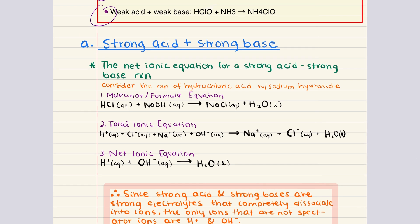In a reaction between a strong acid and a strong base, the strong electrolytes completely dissociate into their ions. So the net ionic equation for a strong acid with a strong base demonstrates the formation of water from hydrogen ions and hydroxide ions. This results in a neutral solution with a pH of 7 since the acid and base completely neutralize each other. We're going to work with the reaction of hydrochloric acid with sodium hydroxide, shown here. The products are sodium chloride, which is a salt, and water.